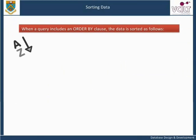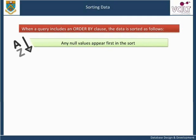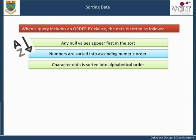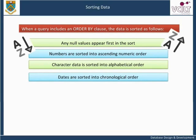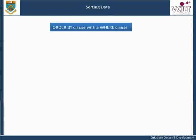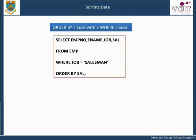When a query includes an ORDER BY clause, the data is sorted as follows: any null values appear first in the sort; numbers are sorted into ascending numeric order; character data is sorted into alphabetical order; dates are sorted into chronological order. We can include an ORDER BY clause with the WHERE clause, as in the following example, which lists all salesman employees in ascending order of salary: SELECT employee number, employee name, job, salary FROM employee WHERE job equals salesman ORDER BY salary.